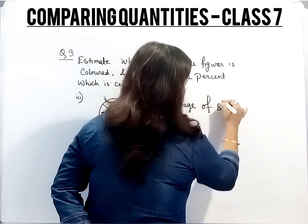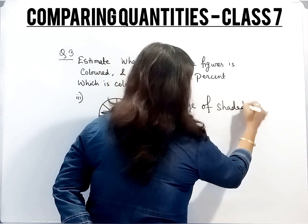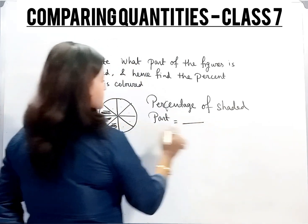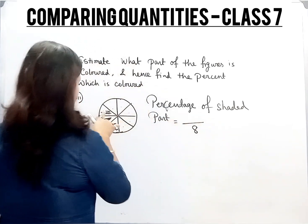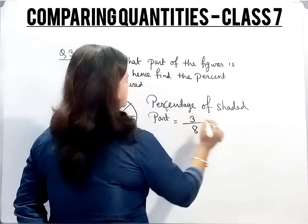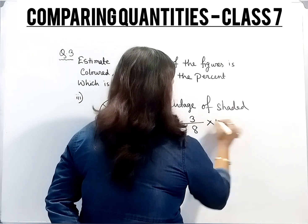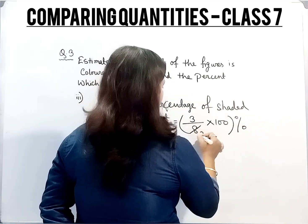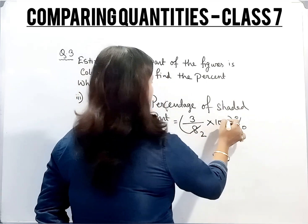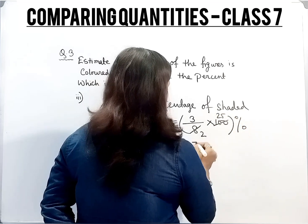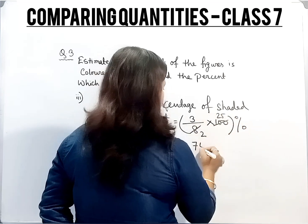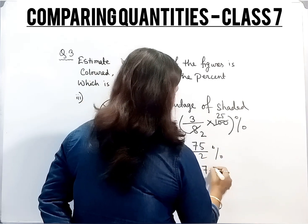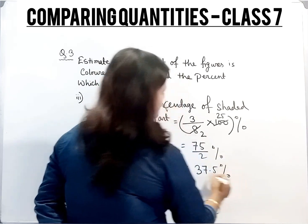Percentage of shaded part: total there are 8 parts, and 1, 2, 3 are shaded. So 3 by 8. Now multiply it by 100 and put the percentage sign. Divide it by 4, we get 2. Divide it by 4, we get 25. So 3 into 25, 75 by 2 percent. This divided gives 37.5. So 37.5 percent.